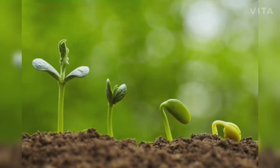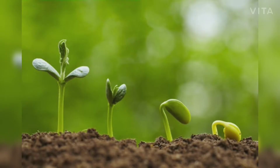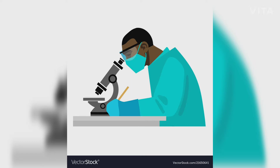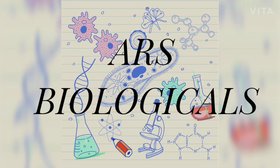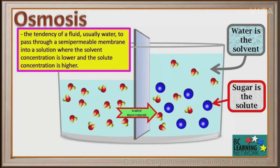Welcome back to my channel. Osmosis is a process in which water molecules pass through the semi-permeable membrane or cell membrane from a higher concentration area to a lower concentration area.